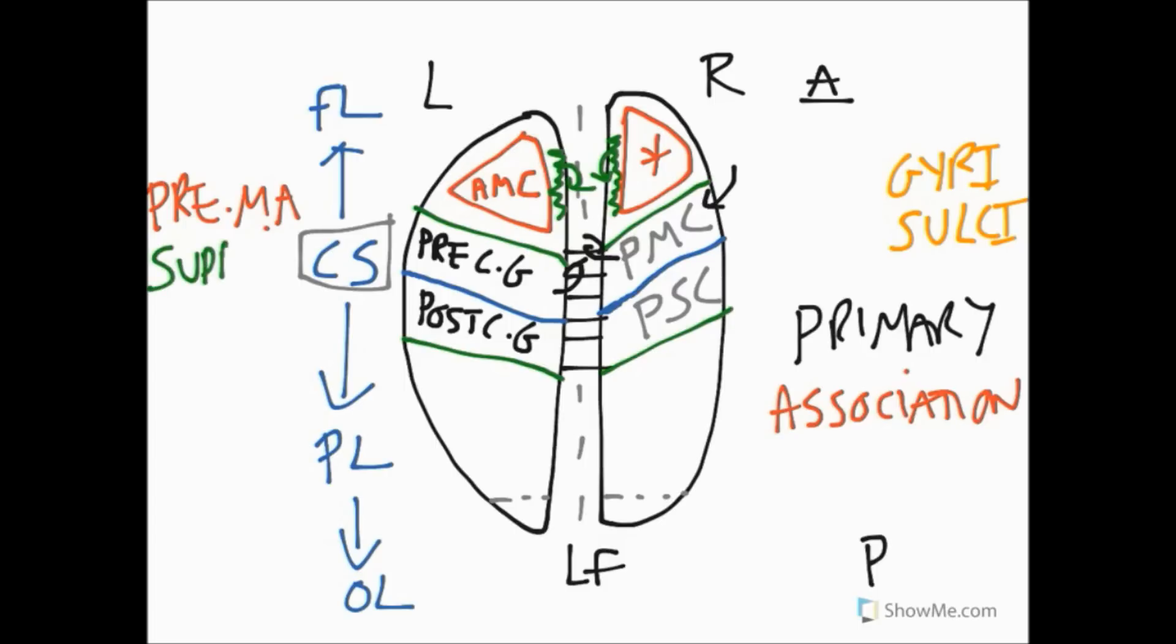They perform slightly different supporting roles. The premotor area is involved in the planning of any motor control which involves eyesight, which involves vision. So any visually guided voluntary motor movement would involve activity first of all by the premotor area, and then neurons would stimulate the primary motor cortex in order to carry out voluntary behavior.